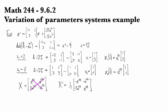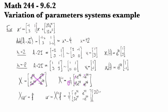The variation of parameters setup says we're looking for X times u, where u prime satisfies X u prime equals our forcing function. In other words, u prime equals X inverse times our forcing function. Distributing some negatives, we've got 1 fourth e to the 2t, e to the 2t, 3e to the 2t, minus e to the 2t. Our forcing function is 20e to the 3t, 12e to the t.